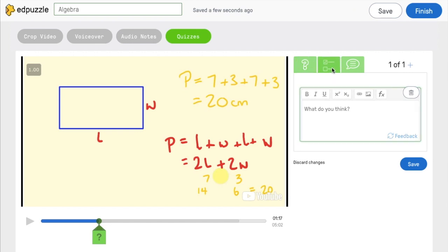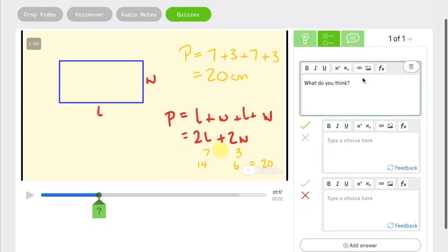You can also add a multiple choice question. Here you write your question, add in options, and you can always add more answers by clicking this button. And these will be automatically graded for you.